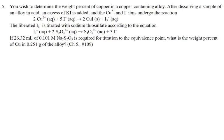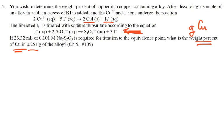Number 5. You wish to determine the weight percent of copper in a copper-containing alloy. After dissolving a sample in acid, you add excess KI — copper and iodine undergo a reaction forming a precipitate and leaving I₃⁻. The I₃⁻ is then titrated with sodium thiosulfate. If 26.32 milliliters of 0.101 molar sodium thiosulfate is required, what is the weight percent of copper in a 0.251-gram sample? We want grams of copper, then divide by 0.251 grams times 100%.